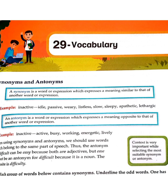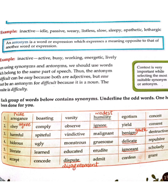The most important rule is that a synonym must belong to the same part of speech as the original word. From each group of words below, one word contains — underline the odd word out. One has been done for you.